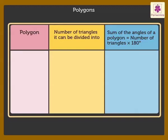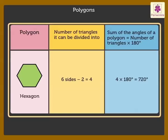If the given figure is a hexagon, the number of triangles it can be divided into is six sides minus two is equal to four. Therefore, the sum of its angles is four into 180 degrees, is equal to 720 degrees.